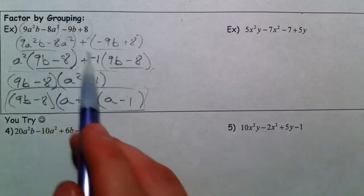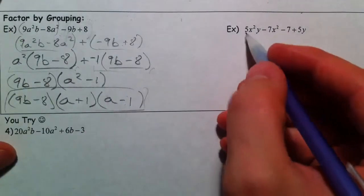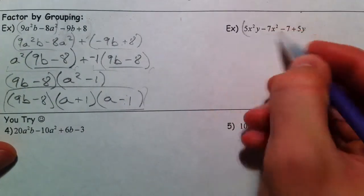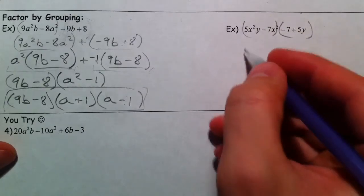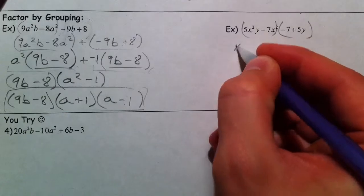So be careful where you put that parenthesis. I suck the negative inside with it. So suck the negative inside with it, and you get an x squared in common.